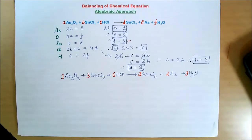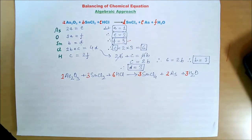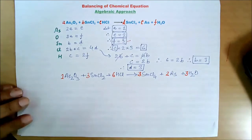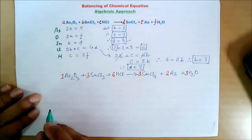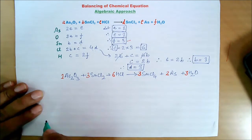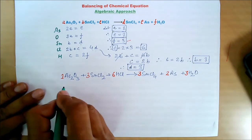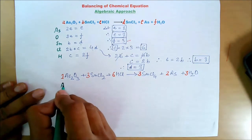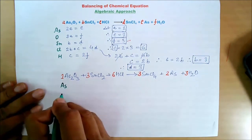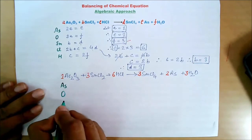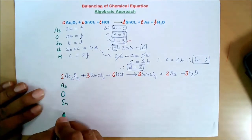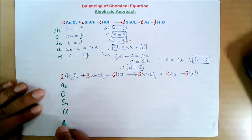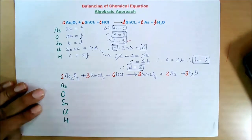Now let us check if we are able to balance our equation. Again, make a list of elements: arsenic, oxygen, tin, chlorine, and hydrogen — with left-hand side and right-hand side columns.